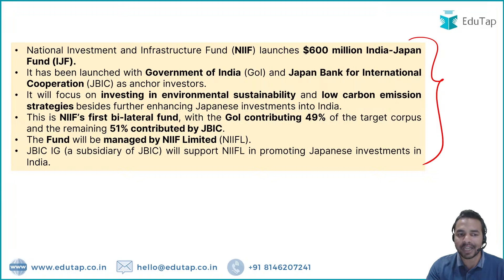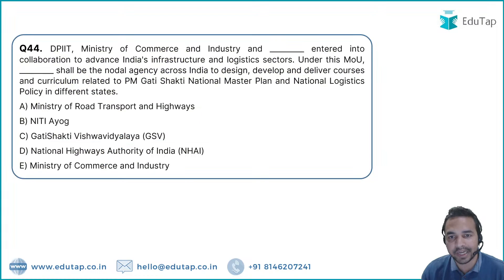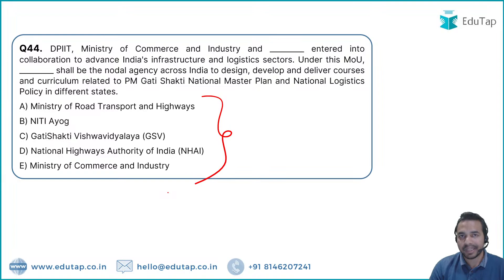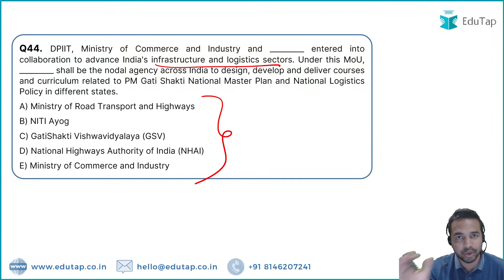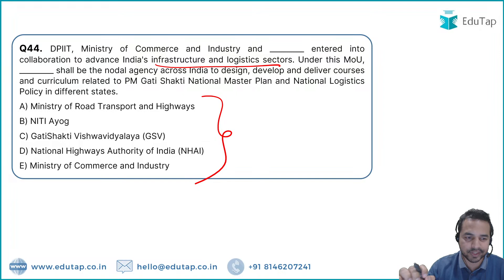Question 47: DPIT under the Ministry of Commerce and Industry signed an MOU to advance India's infrastructure and logistics sector. The organization involved is Gati Shakti Vishwa Vidyalaya — India's first railway university — which is both the MOU partner and the nodal agency.